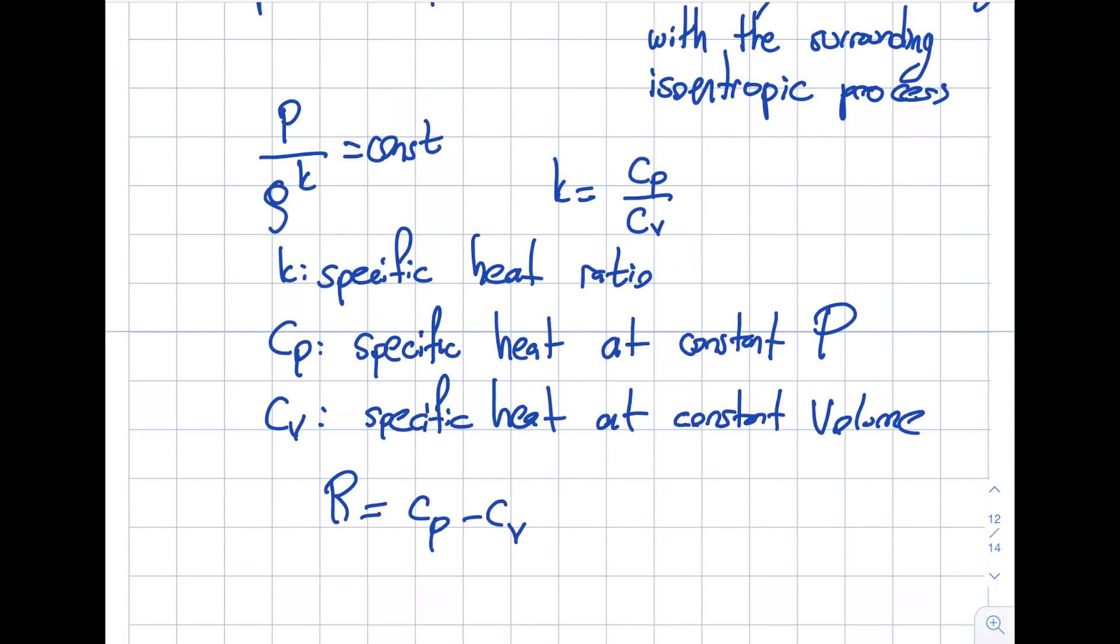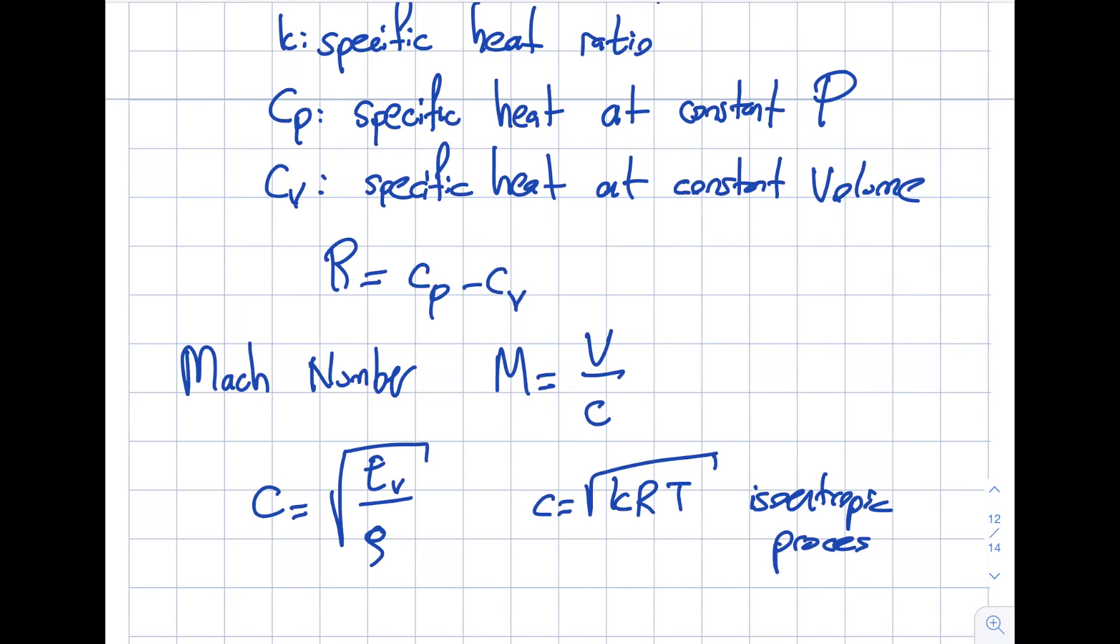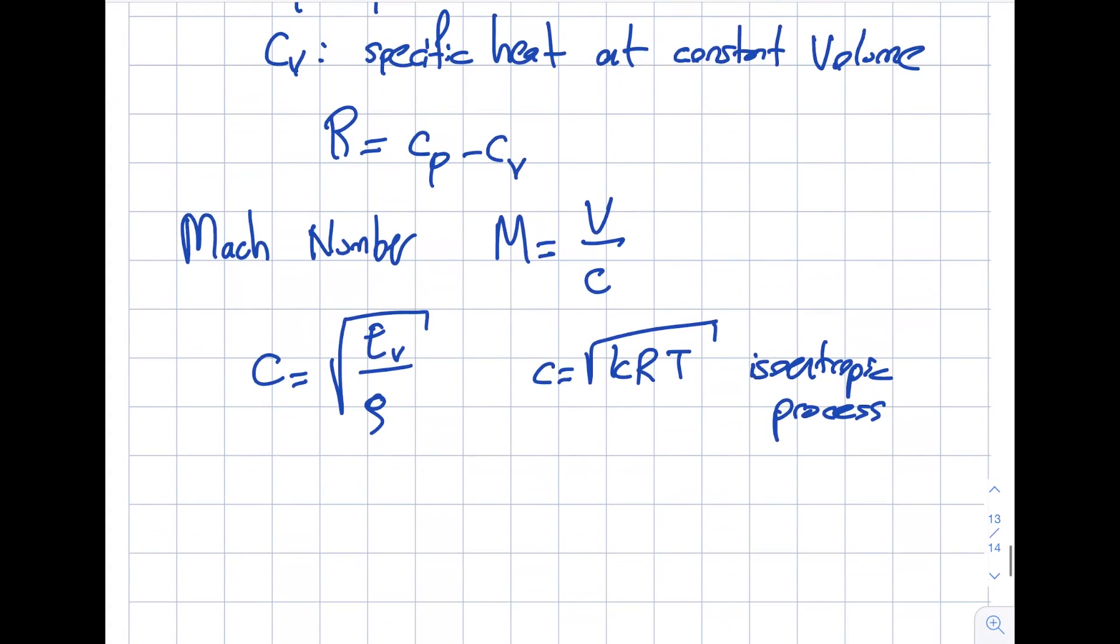One other thing I want to highlight before ending the segment is there's something called Mach number, and I will talk about this in module 10 down the road. This is defined as M equals V over c. C is the speed of sound. The c was square root of E sub V, the bulk modulus, over density. If you remember, this was also square root of k R T for isentropic process.